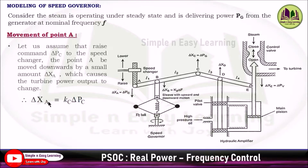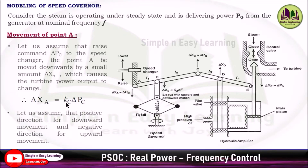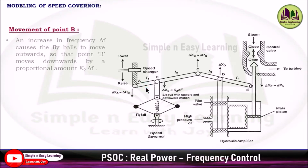del_Xa is proportional to del_Pc, so the proportionality constant is Kc. We assume the positive direction for downward movement and the negative direction for upward movement.